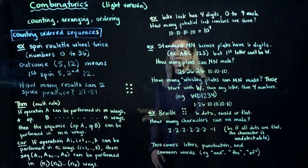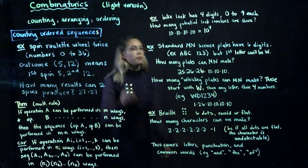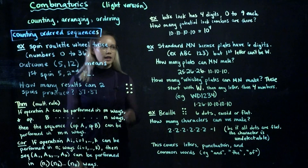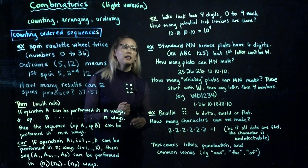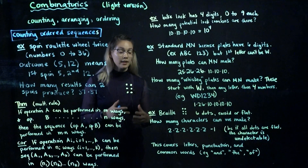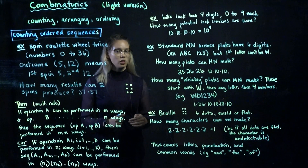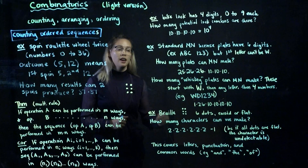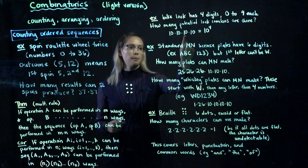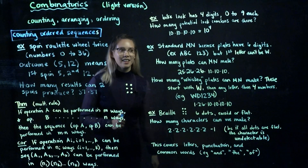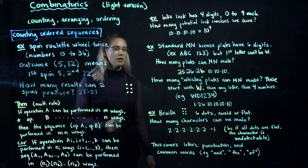Let's use the multiplication rule to count different things. First example: imagine we have a bike lock with four digits, and each digit can be 0 to 9. That's 10 options per digit. So the first digit has 10 options, the second has 10, the third has 10, and the fourth has 10, meaning we have 10 times 10 times 10 times 10 different lock combinations.